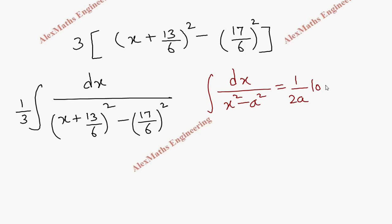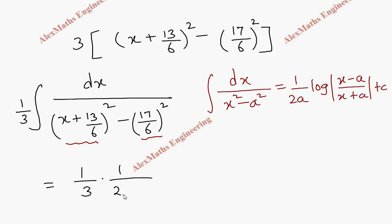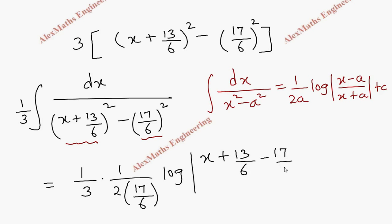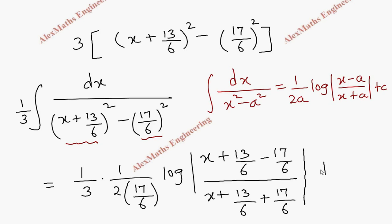The formula gives 1/2a·log|x − a / x + a|. Here x is (x + 13/6) and a is 17/6. Applying this formula, we write 1/3 outside, then 1/(2 × 17/6) · log|(x + 13/6 − 17/6) / (x + 13/6 + 17/6)|.